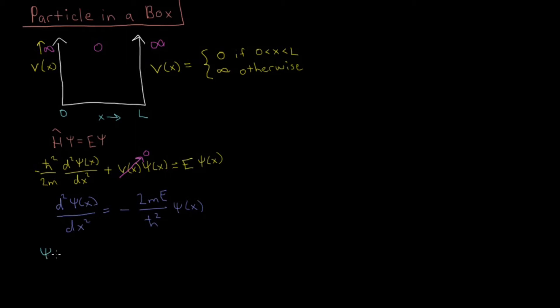psi of X is a function of sines and cosines. So we have A cosine KX plus B sine KX. And that's a very reasonable thing there to assume.